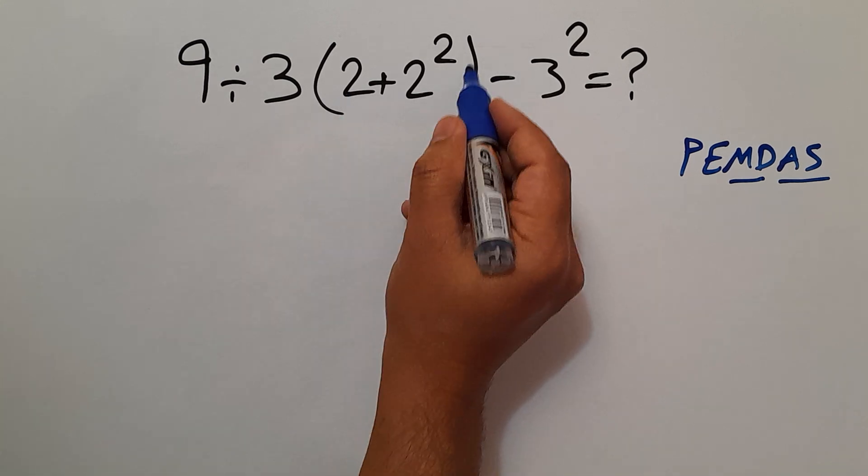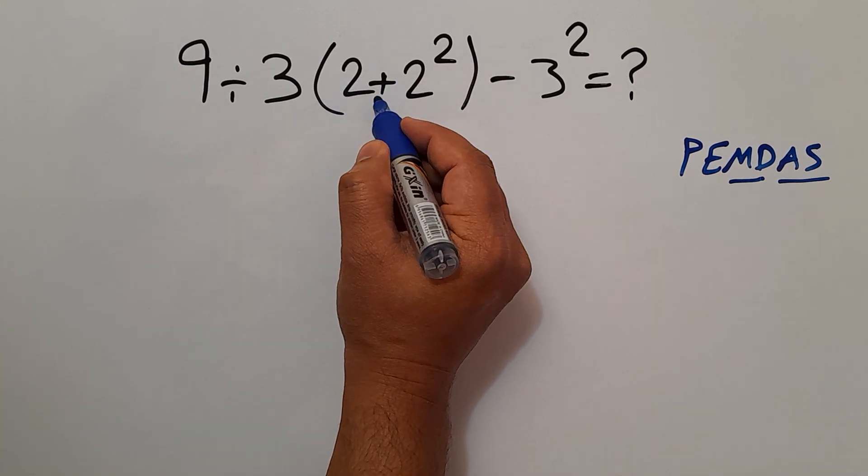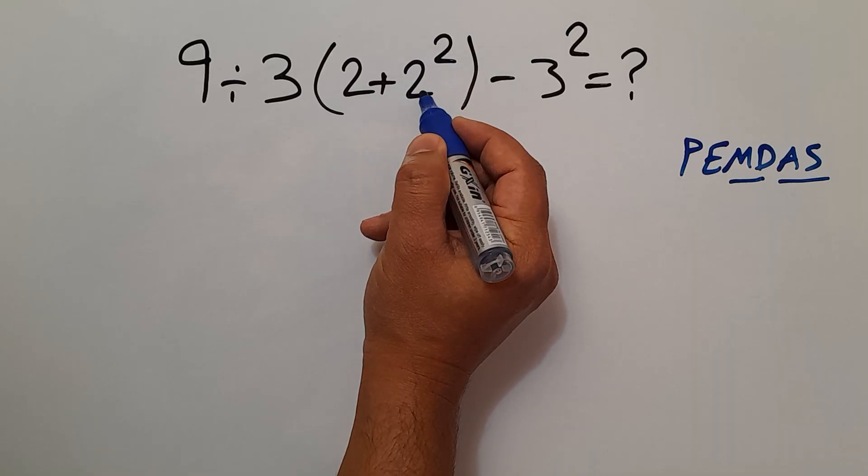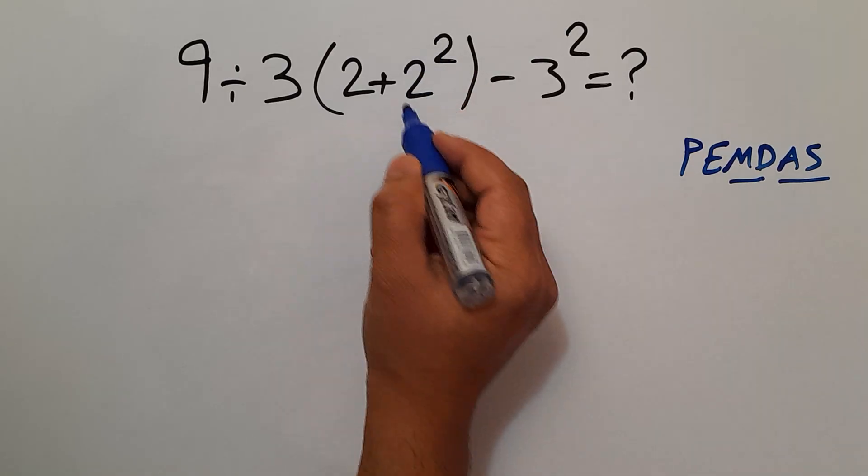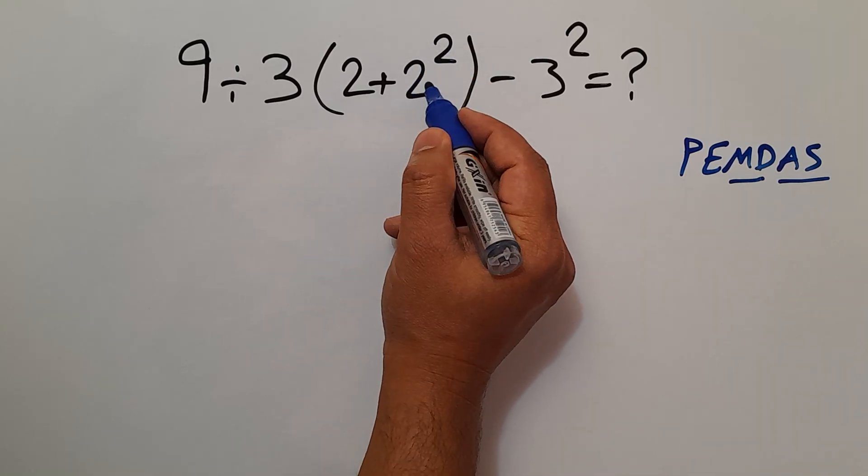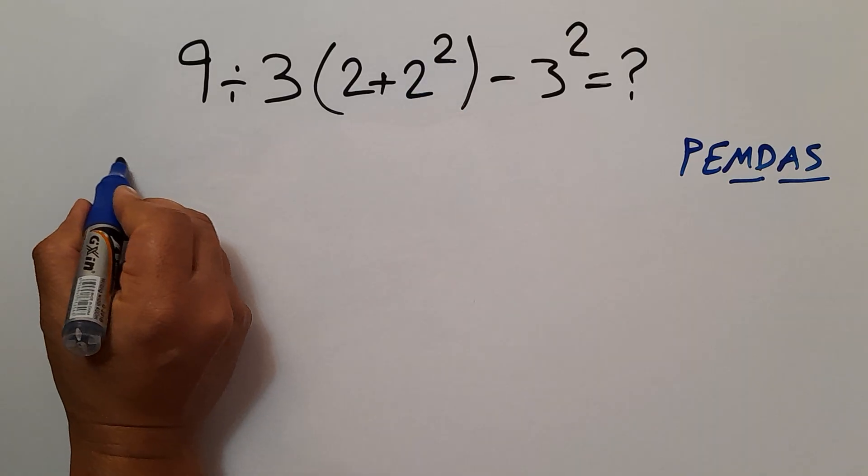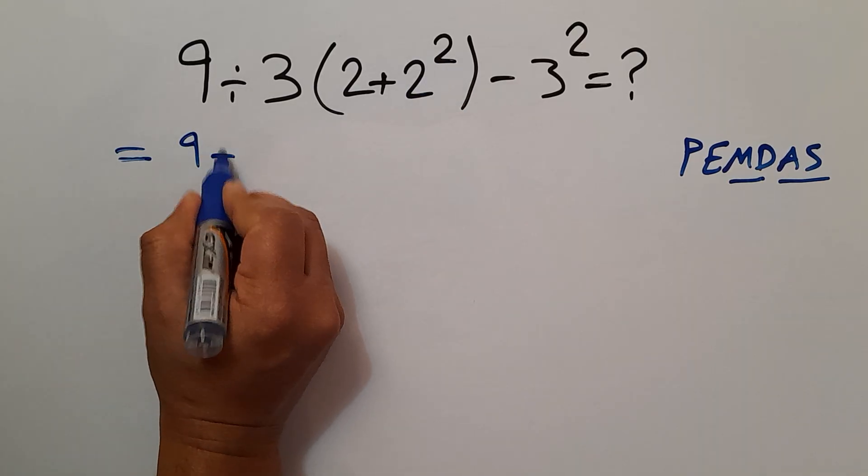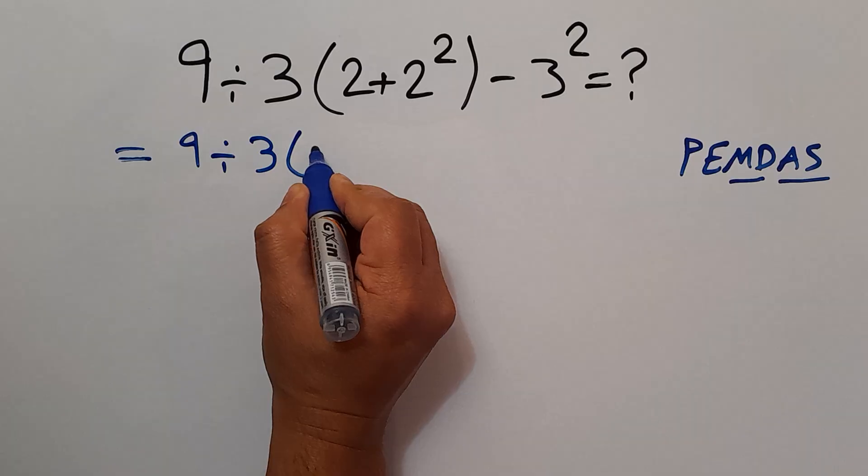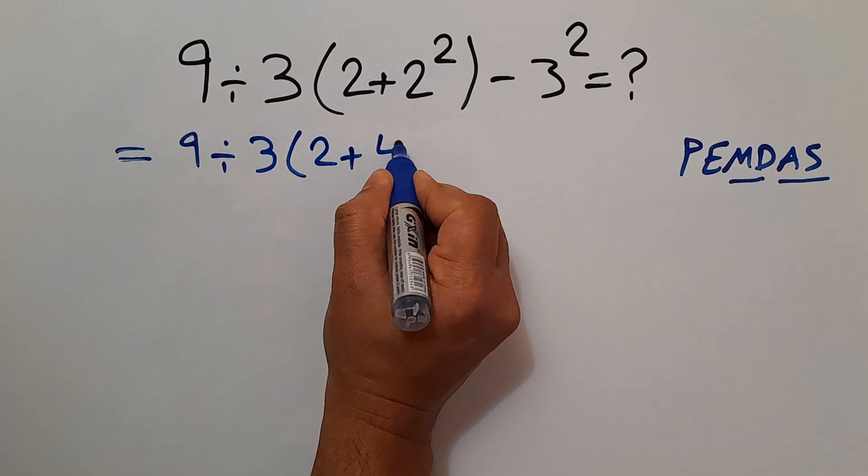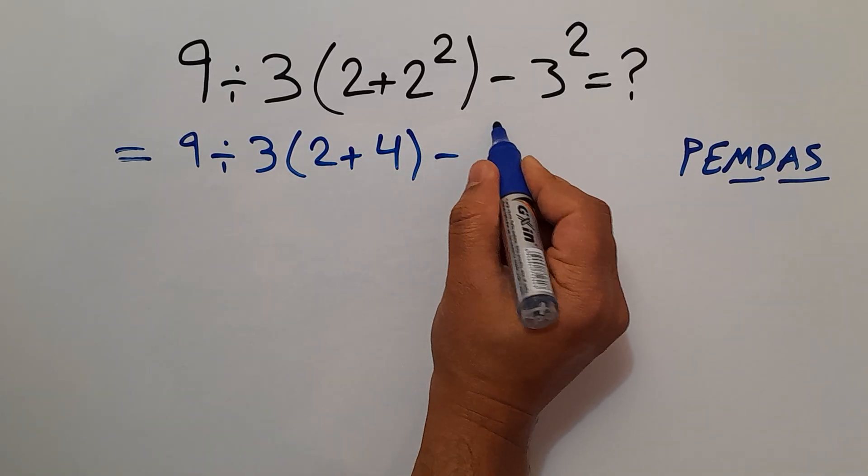Now inside these parentheses, we have this addition and this exponent. According to the PEMDAS, first we have to do this exponent. 2 squared gives us 4. So 9 divided by 3 times 2 plus 4 minus 3 squared.